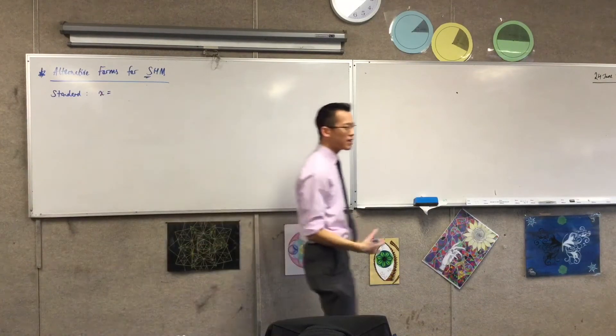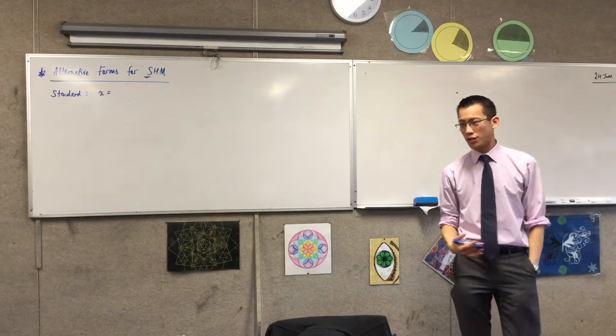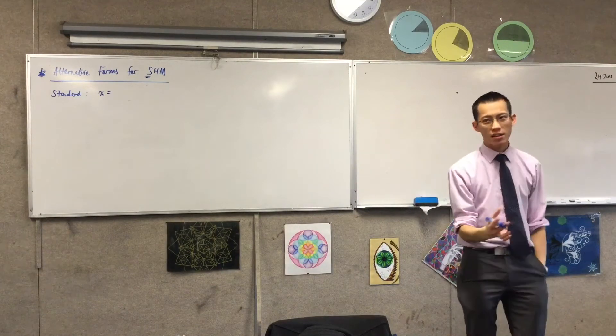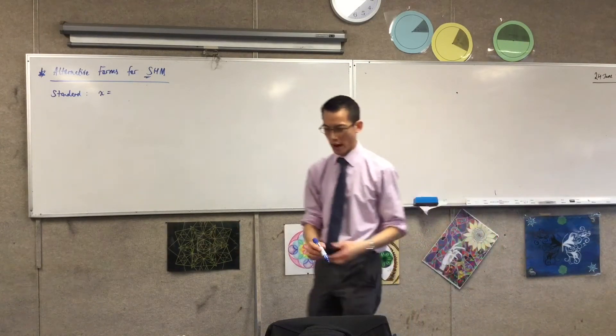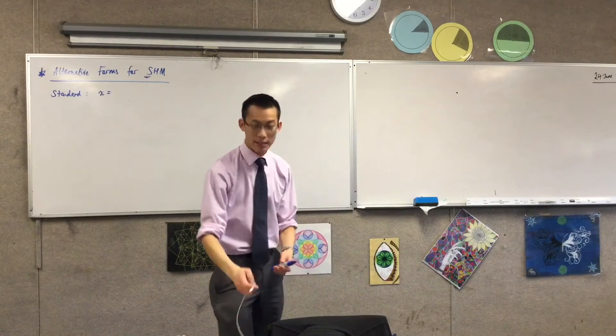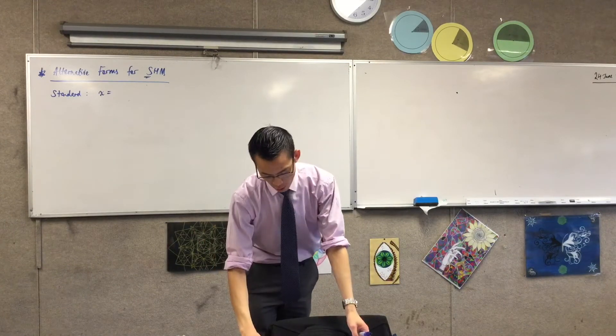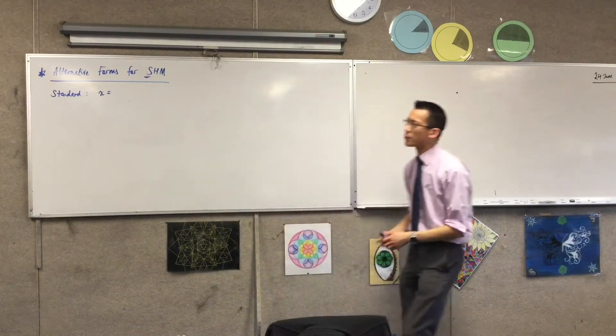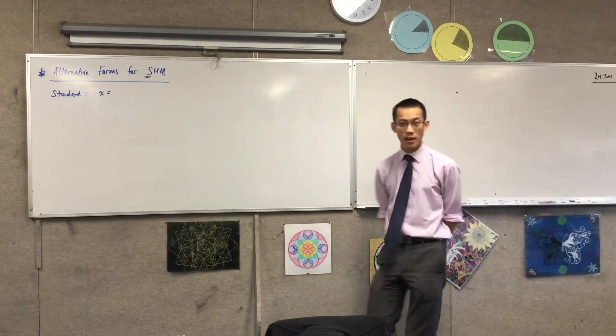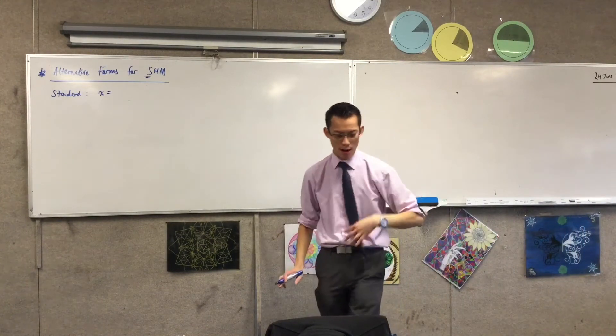However, there are other ways that you can write simple harmonic motion that don't look like they're a single sine or cosine wave, but they really are in disguise. The question then becomes, why would you do that? I'm hopefully going to demonstrate why that would be useful. So I'm going to do two examples, an easy one and a hard one.